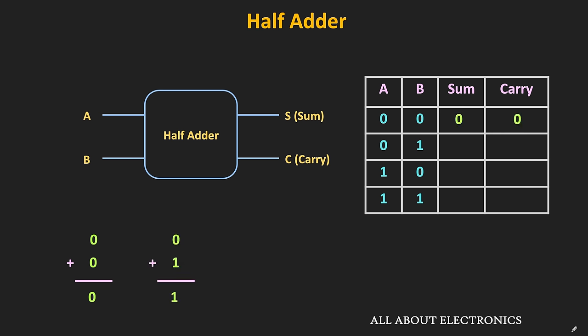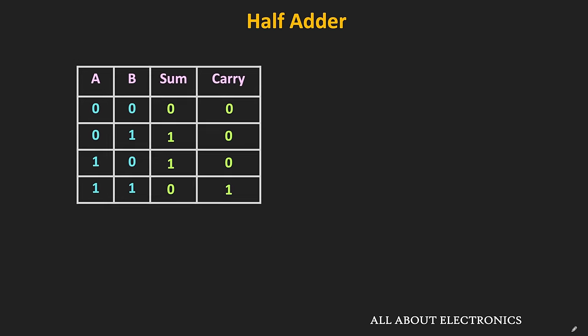Similarly, 0 plus 1 is equal to 1, meaning the sum is equal to 1 and the carry is equal to 0. Likewise, 1 plus 0 is equal to 1, meaning when A is 1 and B is 0, the sum bit is equal to 1 and the carry bit is equal to 0. This is the truth table of the half adder.